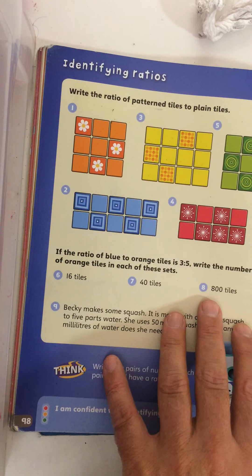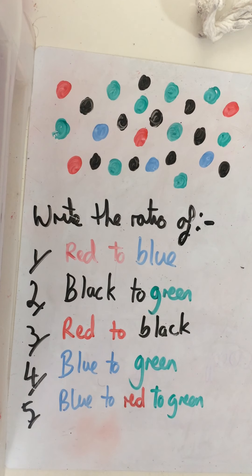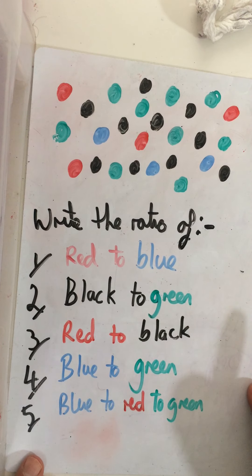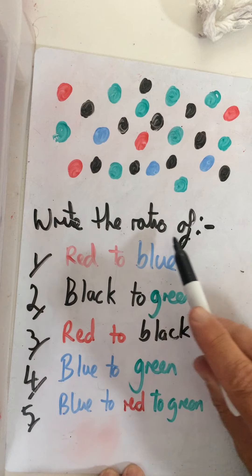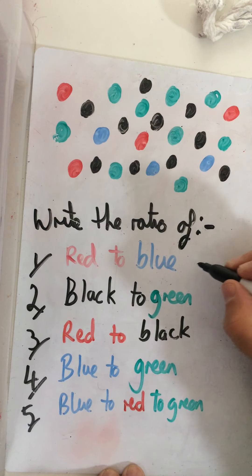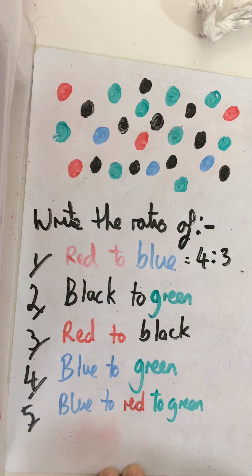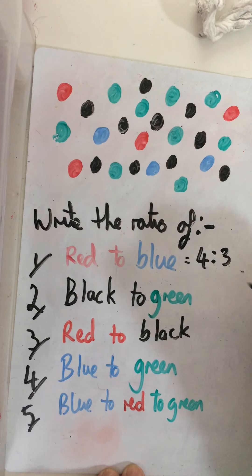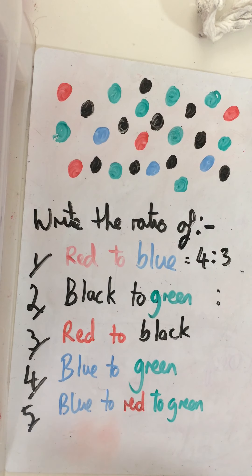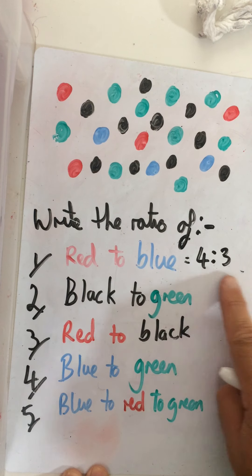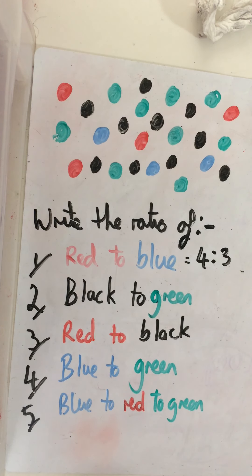Now the ratio of red to blue — write the ratio of red to blue. All I'm going to do is count the reds: one, two, three, four reds — remember my two dots — how many blues? One, two, three — so four to three blues. Straightforward. Then black to green: count the blacks, do the two dots, count the greens and write the numbers in. Could you quickly do those please? Just write the answers. Pause the video while you do that.